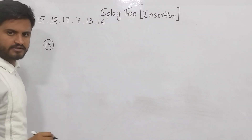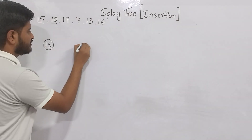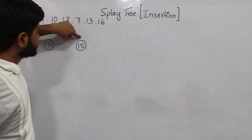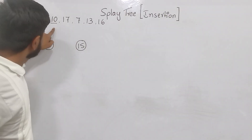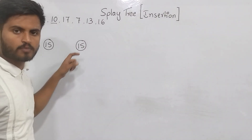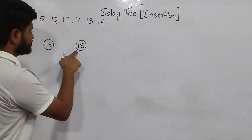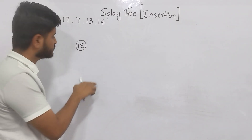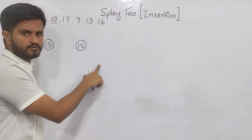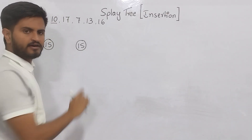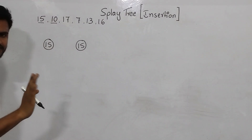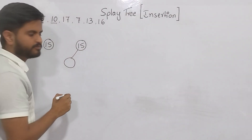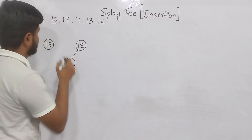Next, let's insert 10. 15 is already there, so I must insert 10. I will check with 15 whether 10 is less than 15 or greater than 15. If it is less than 15, I will write it towards the left — make it the left child. If it is greater than 15, I will make it the right child. Since 10 is less than 15, same as in a binary tree, we insert it into the left.